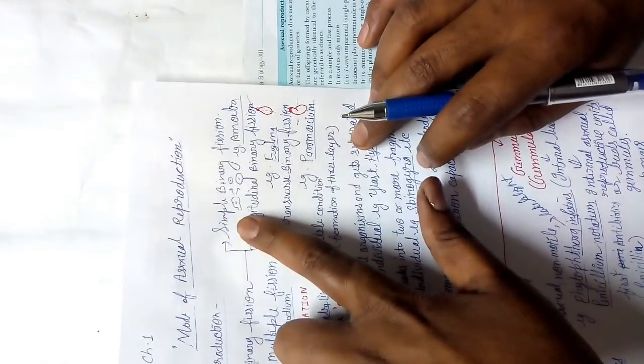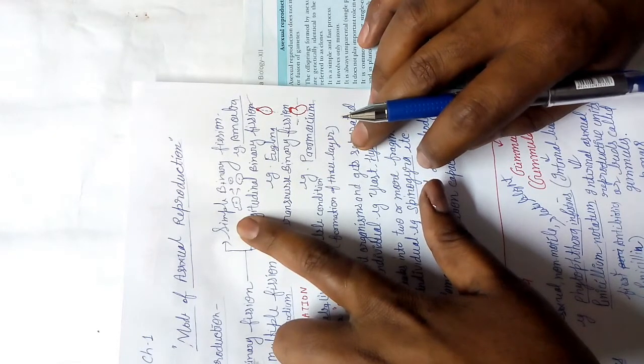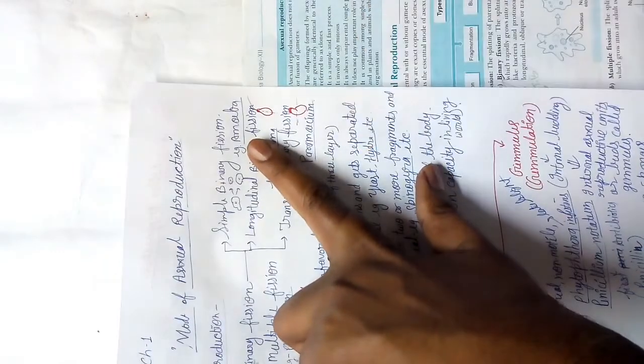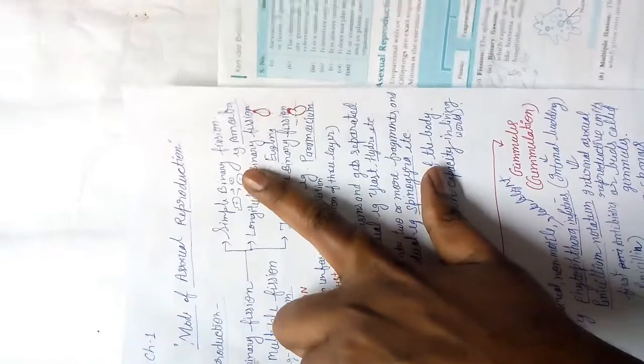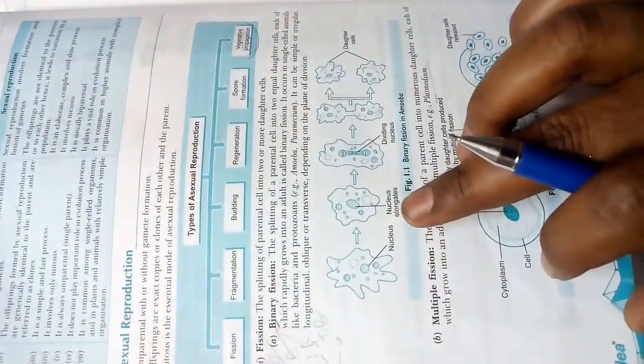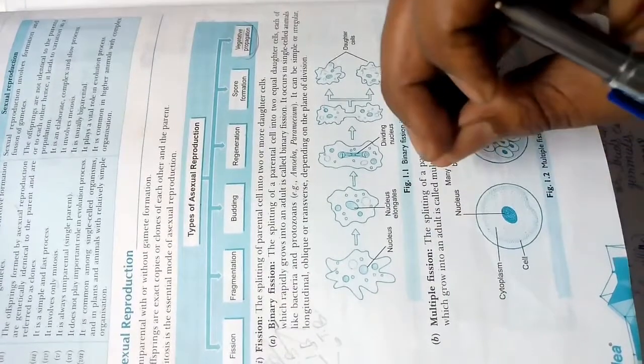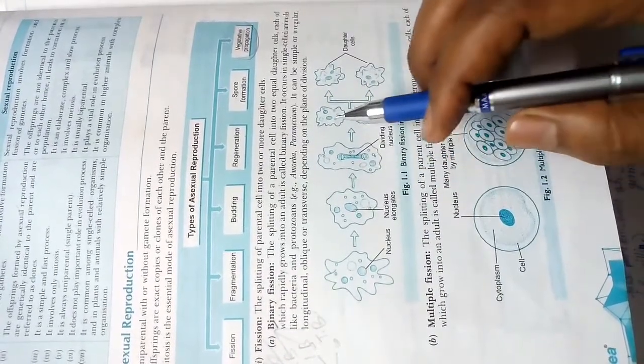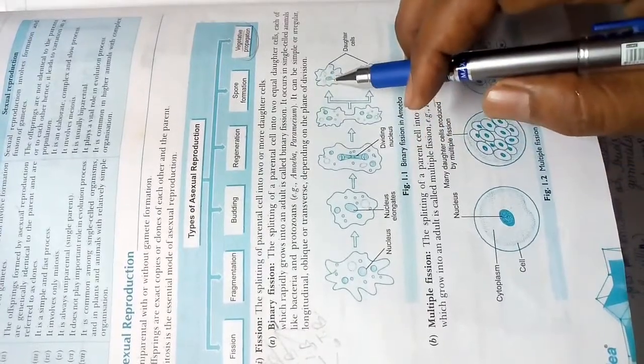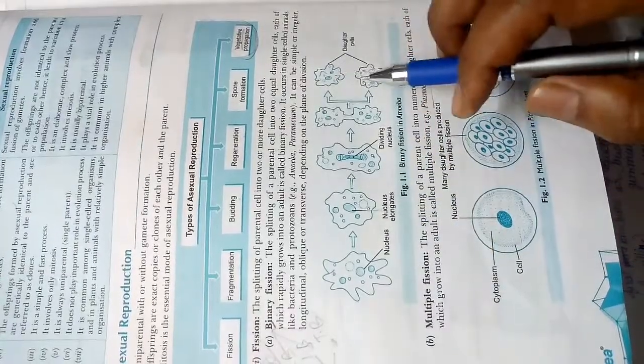Simple binary fission means the parent body simply divides into two parts. The example of this is Amoeba. You can see in the diagram: the nucleus gets elongated, a dividing nucleus forms, and finally this single Amoeba divides into two daughter cells.